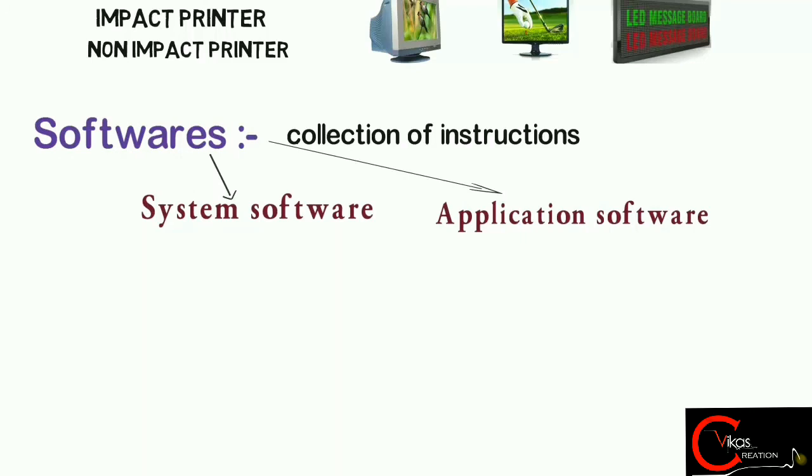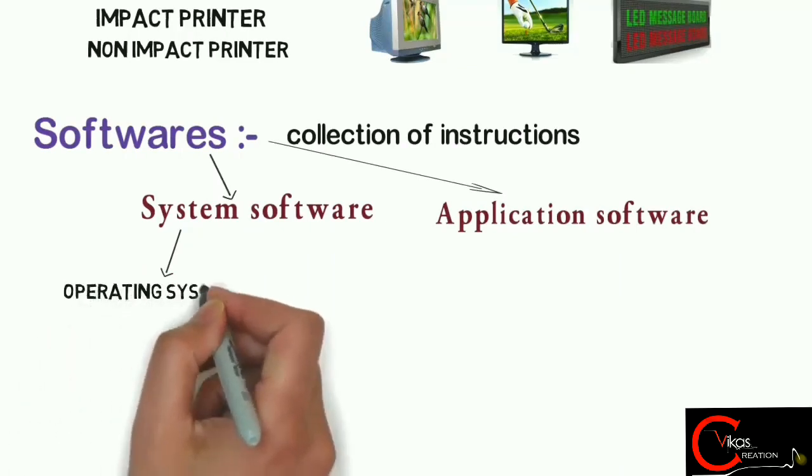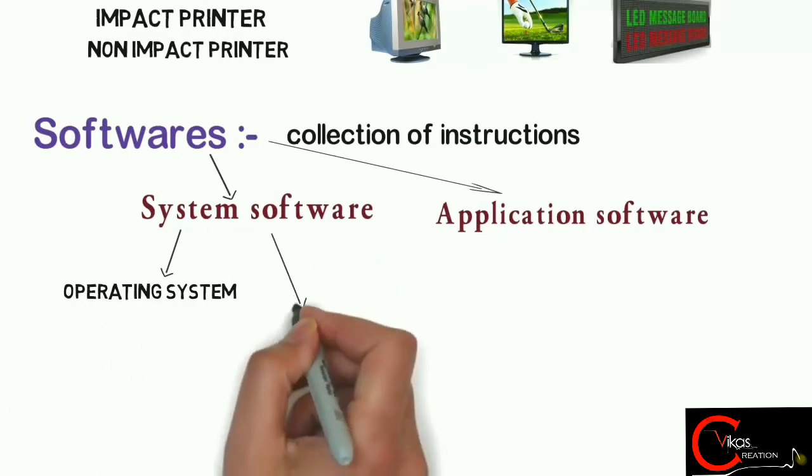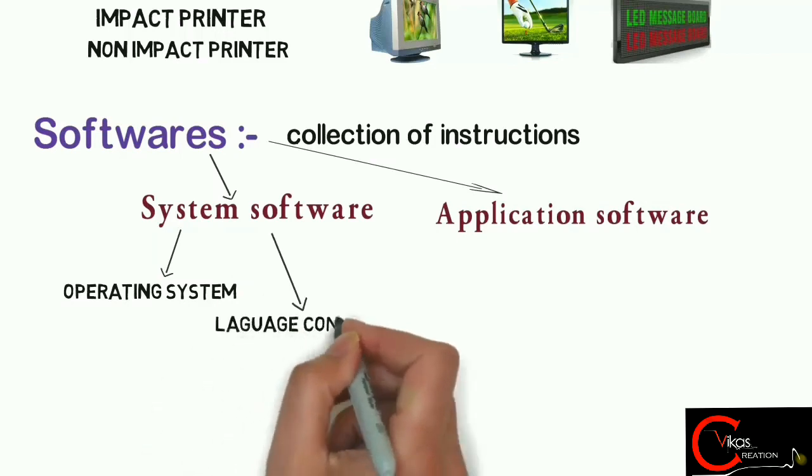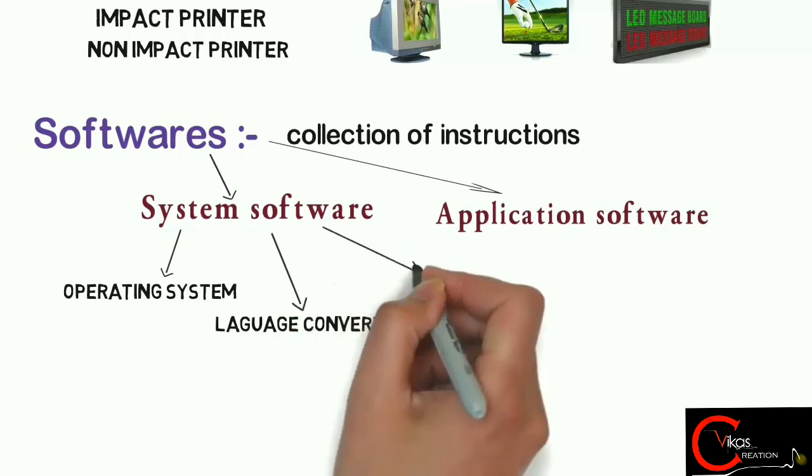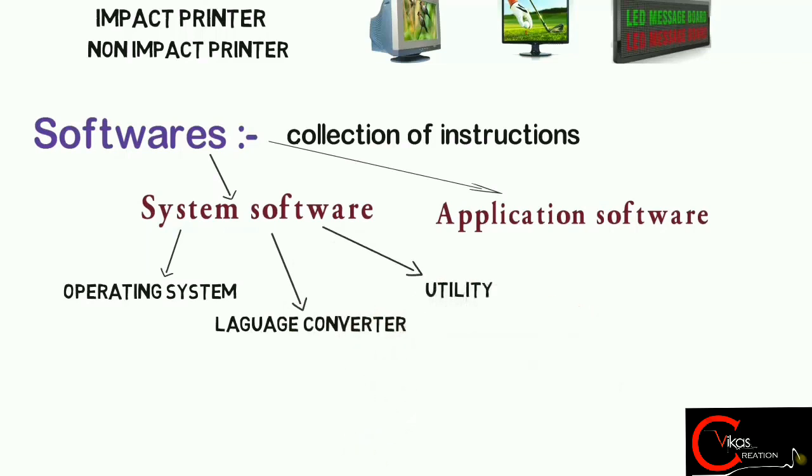Application software may simply be referred to as an application. The system software has been divided in three types. The first one is operating system that supports a computer's basic functions such as scheduling tasks and controlling peripherals. And the second one is language converting software like compiler, interpreter, and loader. And the third type is utility software. It is a type of system software used to support the computer infrastructure designed to help analyze, configure, optimize, or maintain a computer.